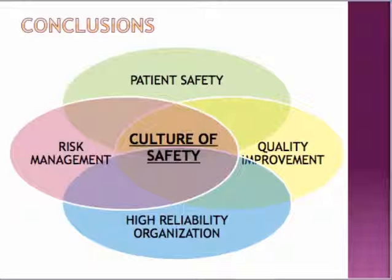High reliability organizations are typically things like the aircraft industry or the nuclear power industry, where any mistake could lead to a widespread disaster affecting many people. In medicine, we typically only affect one patient at a time when we have an error, but we need to be as highly reliable as we can be, similar to the airline and nuclear industries. We're going to use this time every other month to learn about safety and quality in the healthcare setting, and we will use the lists generated from today's activity to improve the GHS safety culture. Thank you for hanging in there with me as an absentee teacher.